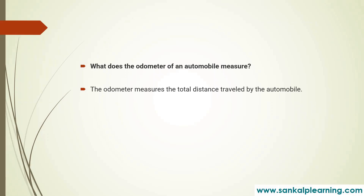Our next question is: what does the odometer of an automobile measure? The odometer is an instrument or device which is used to measure the speed with respect to distance, so by that we can calculate the speed of the automobile, or we can also say the distance traveled by the automobile can be calculated using the odometer.